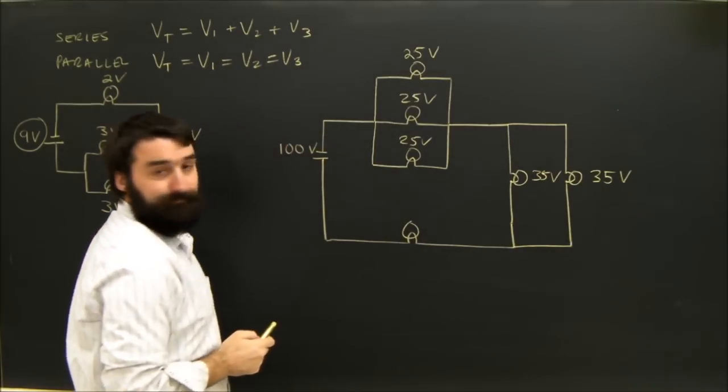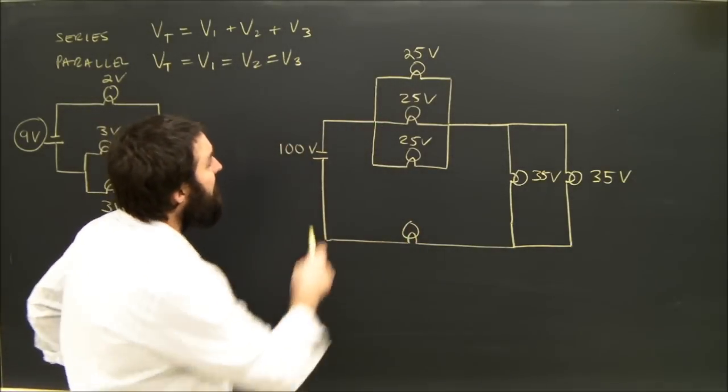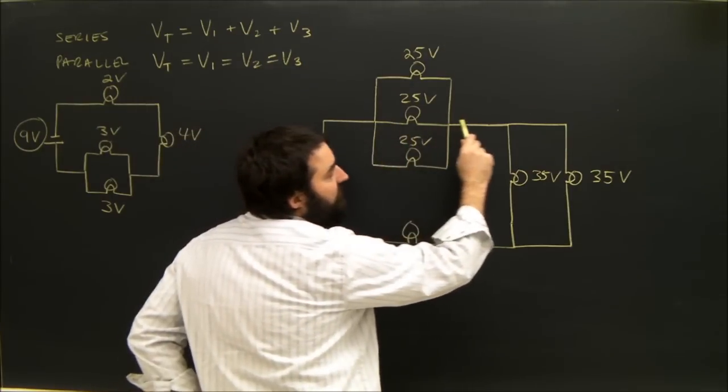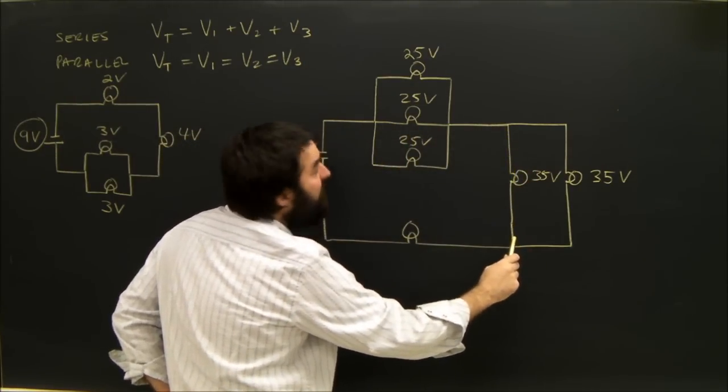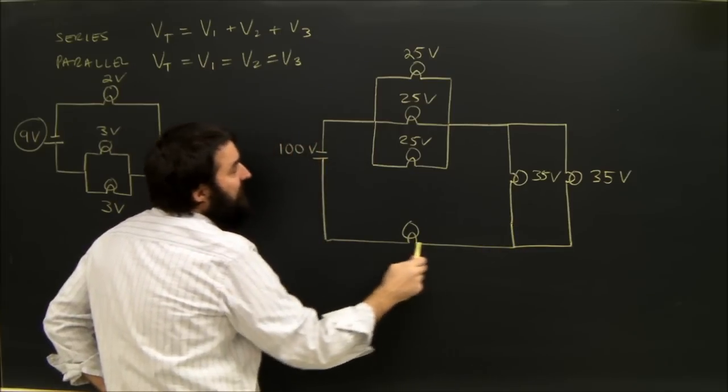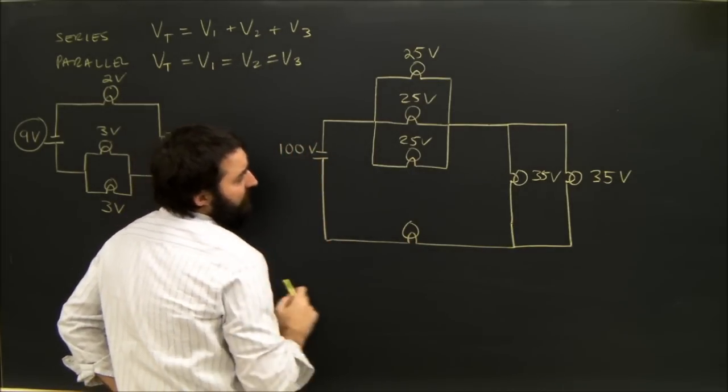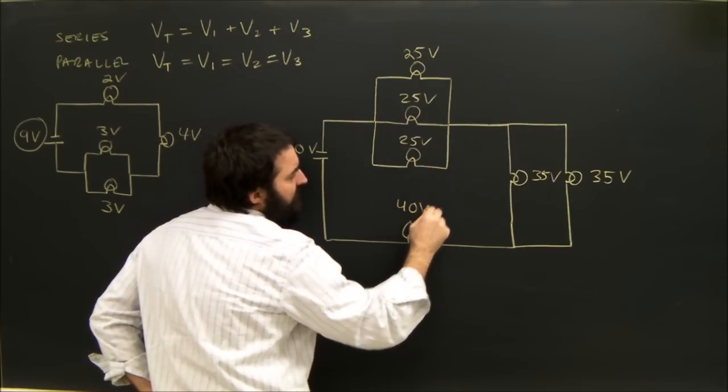Well, what about this guy? It's not connected in parallel to any of these, but an electron goes through here, loses 25, goes through one of these branches, loses 35, but at 60, they have 40 left because they started with 100. So this has to be 40 volts.